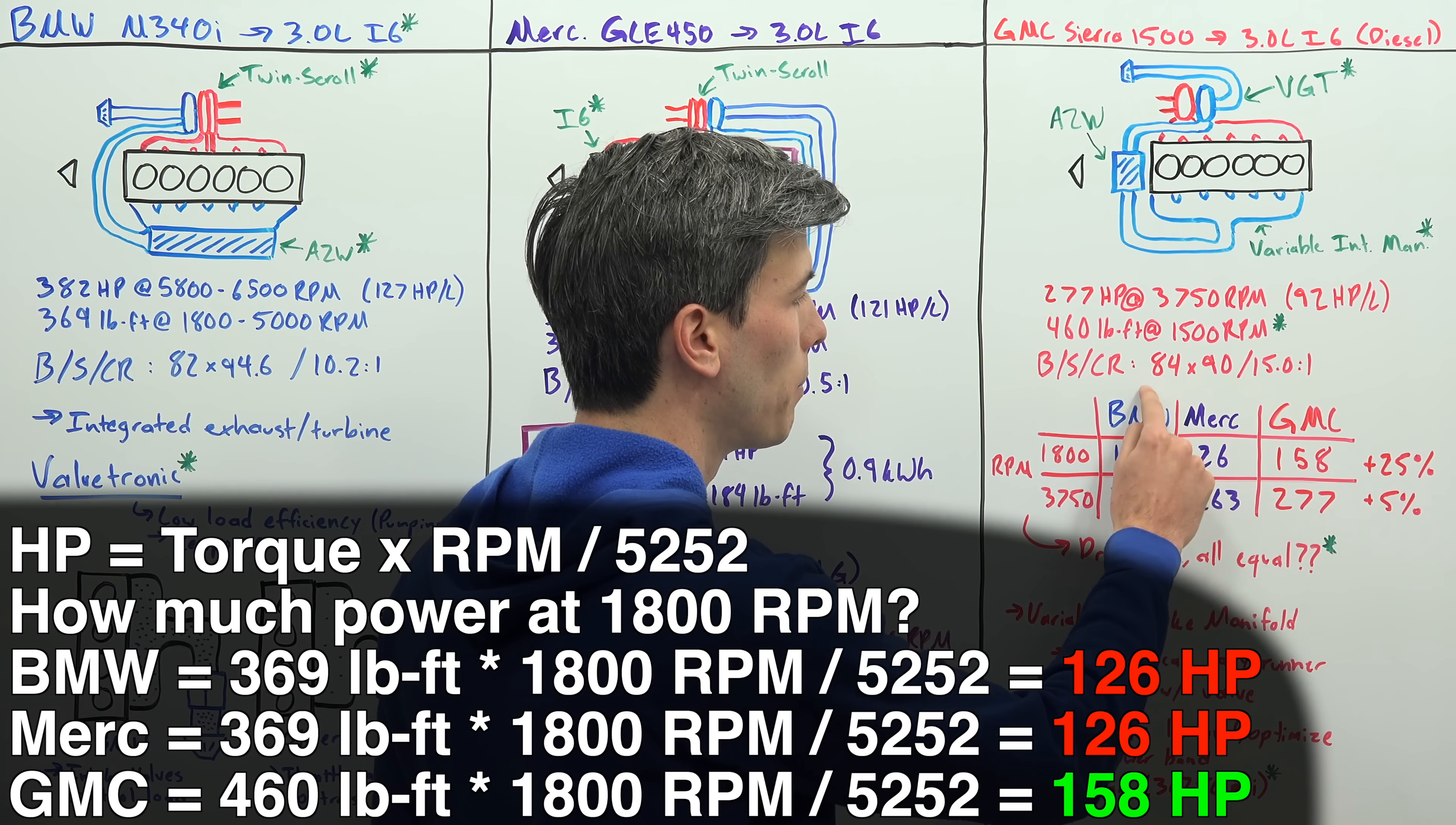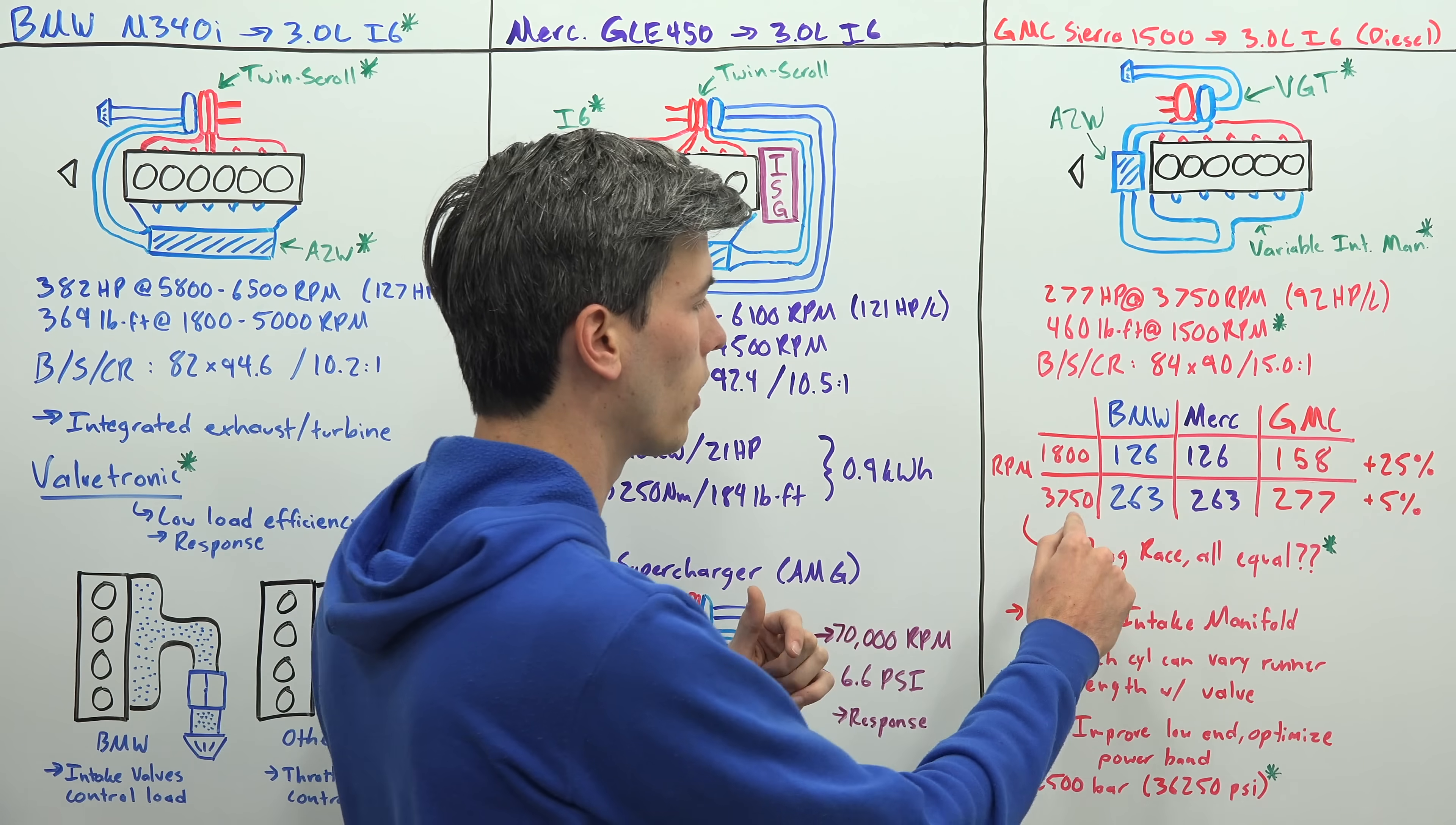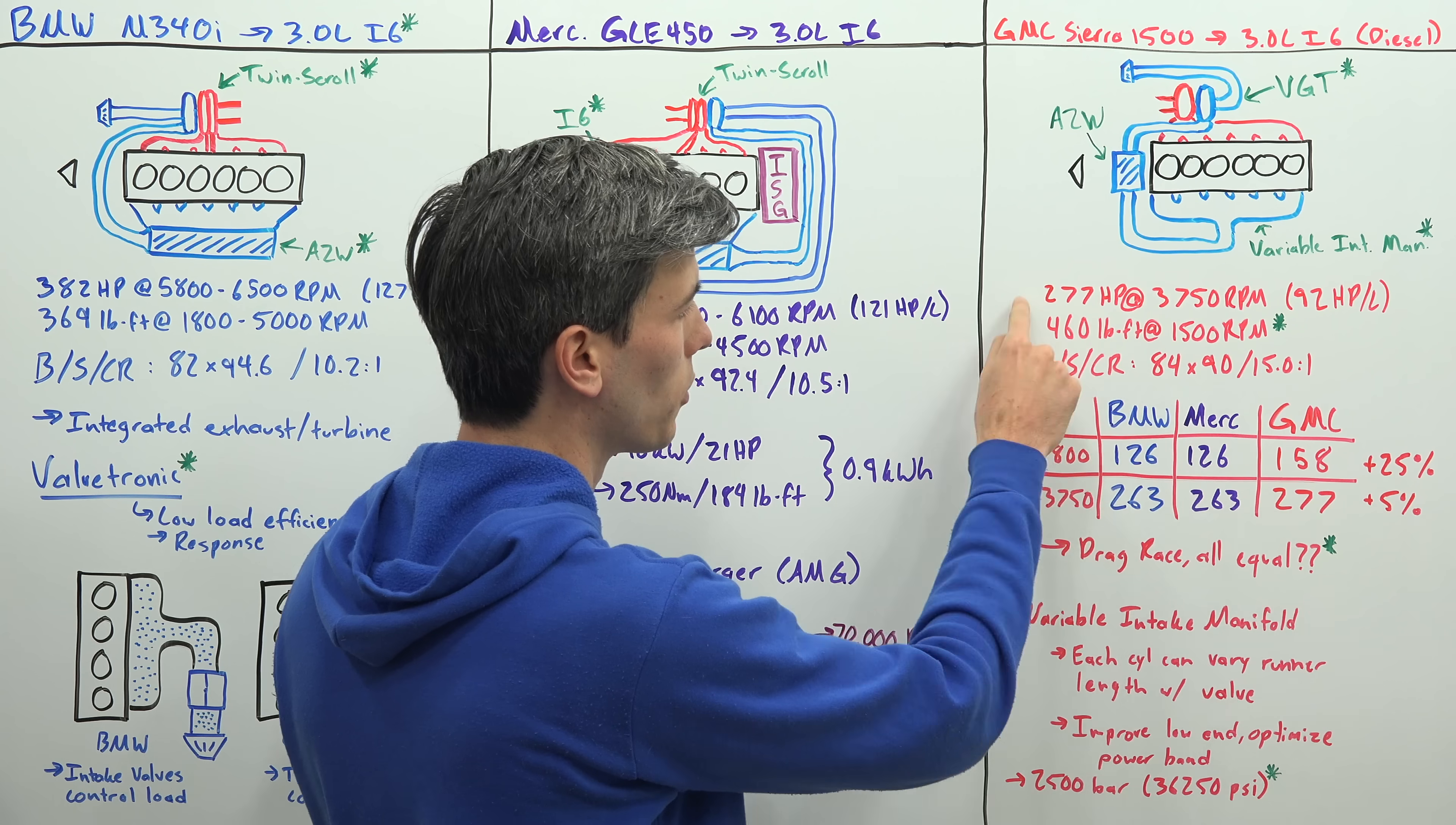The GMC, because it has significantly more torque, is making 158 horsepower at 1800 RPM, 25% more than the BMW and the Mercedes. Now that advantage starts to go away once we get into the higher RPM. At 3750, that's when this diesel engine is making its peak horsepower, 277.